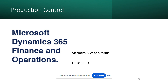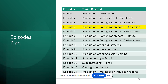We are in episode number four. I strongly recommend you to check out the previous three episodes before this one, as that's how you'll get the full benefit of this production control series. In this series, we are going to cover discrete manufacturing processes, and probably in a later series we will cover process or lean manufacturing.